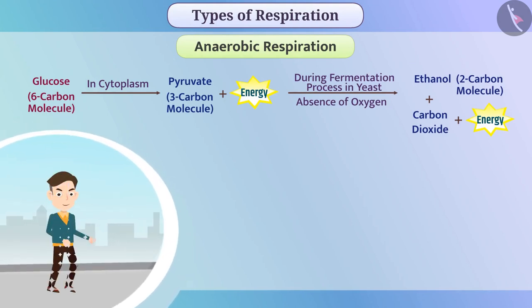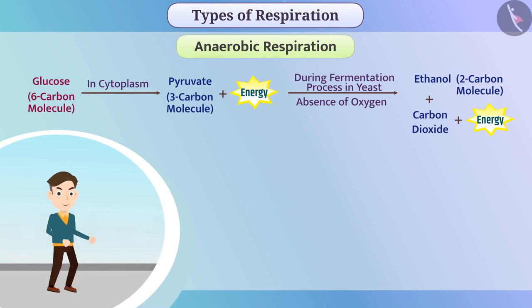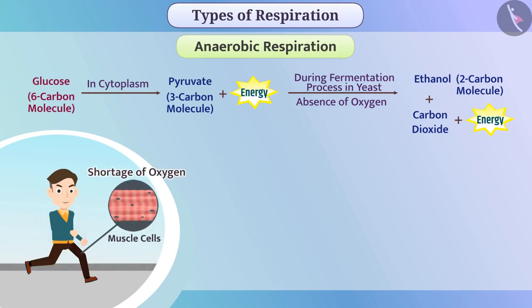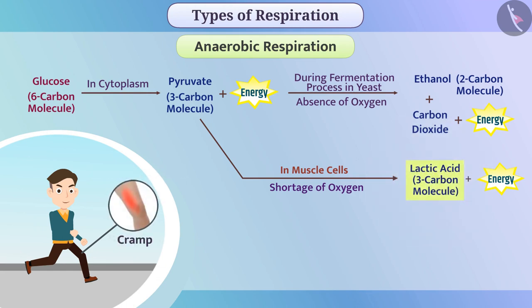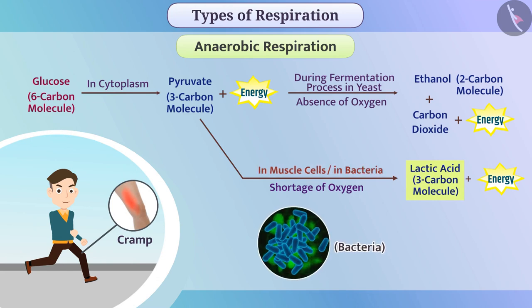Sometimes, while doing work, the need for energy increases. In such a situation, there is often a shortage of oxygen in the muscle cells. To generate energy with less oxygen, these cells break down pyruvate into the 3-carbon molecule lactic acid. Formation of lactic acid can cause cramps. We can see this method of generating energy in some bacteria also.